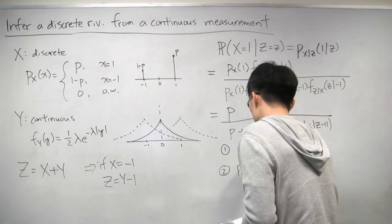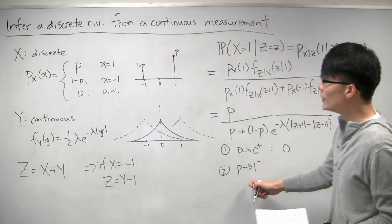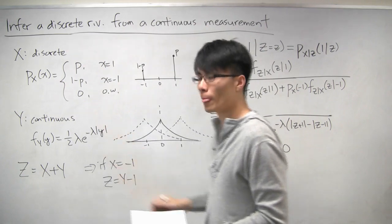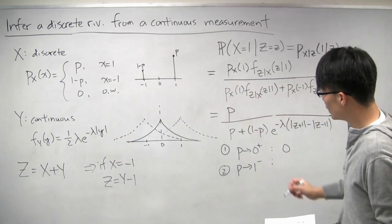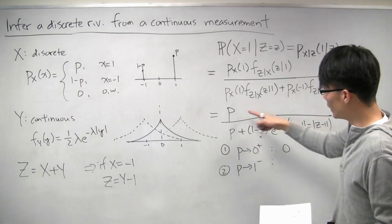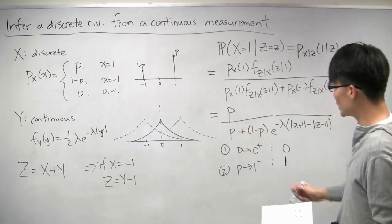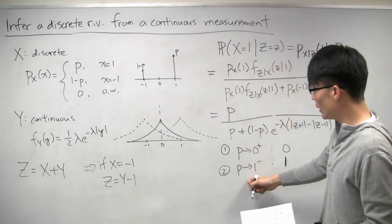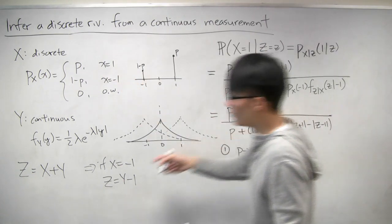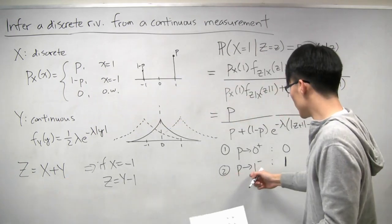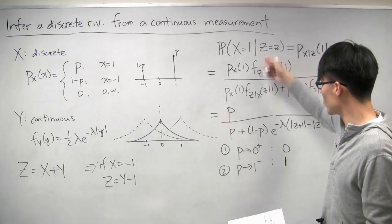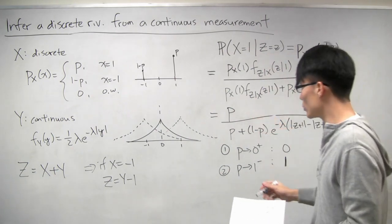Next, when p goes to 1: x is for sure going to be 1. The numerator is 1, and the second denominator term has factor 1 minus p equals 0, so it vanishes. The answer is 1 over 1, which is 1. This makes sense: if we already know x is definitely equal to 1, conditioning on z shouldn't change that, so the conditional probability remains 1.